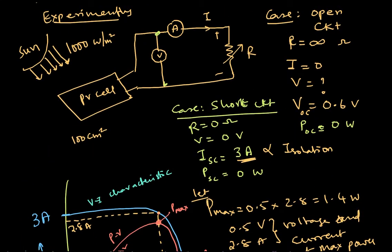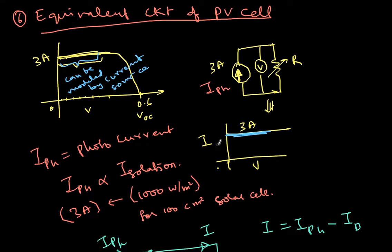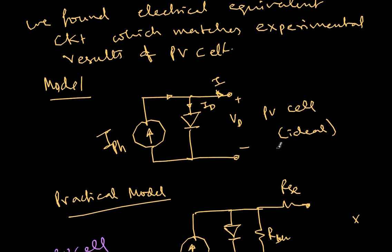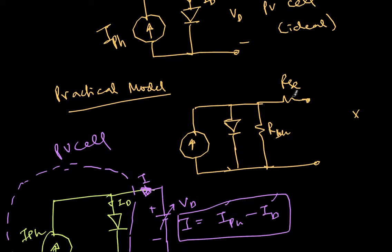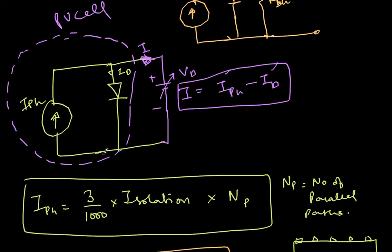To model this, the circuit that matches the experimental behavior is a current source in parallel with a diode. When the voltage is very low, the diode current is low and doesn't matter, so the current is almost constant. As voltage starts increasing, more current flows into the diode, which deprives the output current, causing it to fall. This is the ideal model — a current source in parallel with a diode.